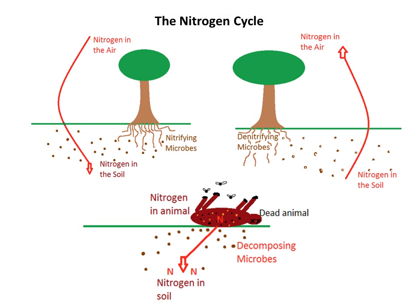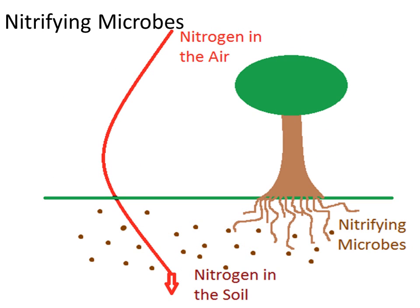This cycle takes nitrogen from one source, such as the air all around us, and alters the form of that nitrogen with the help of the microbes, so that it can be used by a completely different source, such as plants. This process of taking nitrogen out of the air and putting it into the soil for plants to use is called nitrification.